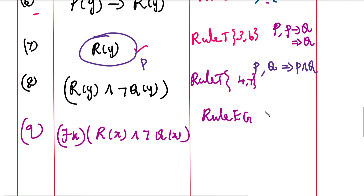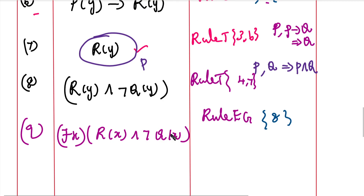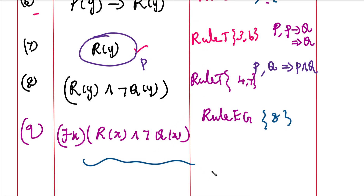Here we use statement number 8. So we have our conclusion derived. When we have the final statement, we have the required value — the proof is complete.